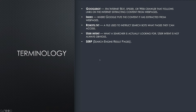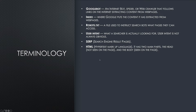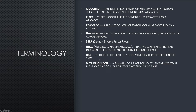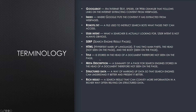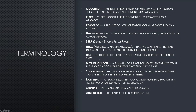SERP stands for search engine result pages — where you want to be. HTML is hypertext markup language. It has two main parts: the head, not seen on the page, and the body, mainly seen on the page. The title is stored in the head of a document and therefore not seen on the page. Meta description is a summary of a page for search engines, stored in the head of a document, therefore not seen on the page. Structured data is a way of marking up data so that search engines can understand and present it better. A rich result is a search result that can convey more information in a richer way, often relying on structured data. A backlink is an incoming link from another domain. Anchor text is the readable text describing a link.